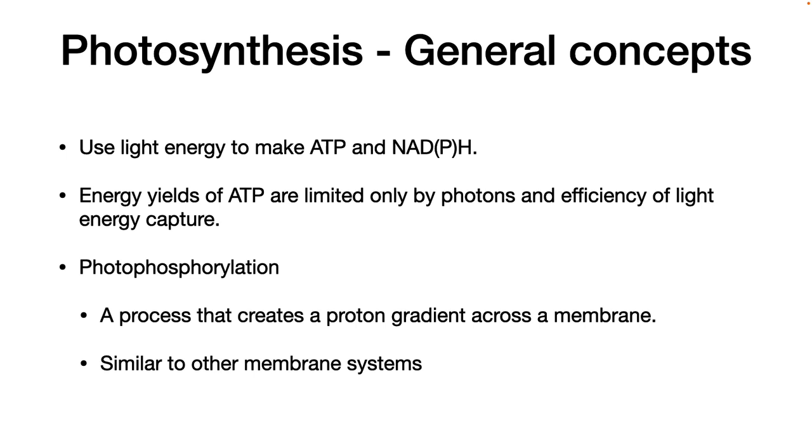Here are the learning outcomes. What do all forms of photosynthesis have in common? First, they use light energy to make ATP and NADPH. Remember that these are the fuel that powers biosynthesis. Second, the energy yield of ATP is limited only by photons and the efficiency of light capture. If the sun is shining, these microbes can make ATP from it.